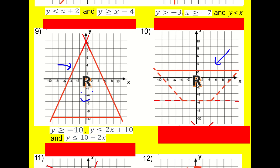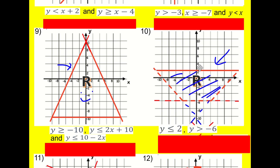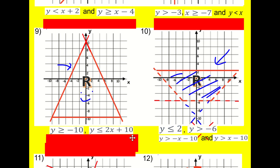Number ten is an upside-down isosceles trapezium that's been enclosed — four inequalities. Y is less than or equal to two. Y is greater than minus six. And then the diagonal lines: y is greater than minus x minus ten, and y is greater than x minus ten. If you're getting this, you are in good shape — there's a lot going on here.